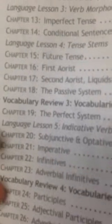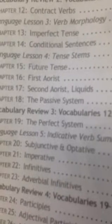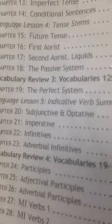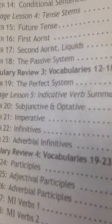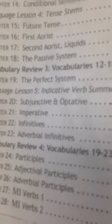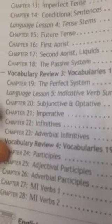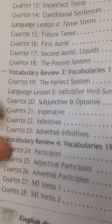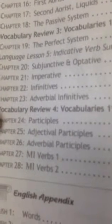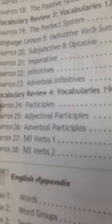You were introduced to passive voice earlier, but a complete passive system will be introduced in chapter 18, along with the perfect system in chapter 19. Another aspect of the verbs is mood, which forms the lessons in chapters 20 and 21. Other verb parts include infinitives and adverbial infinitives, as well as participles and adjectival participles.